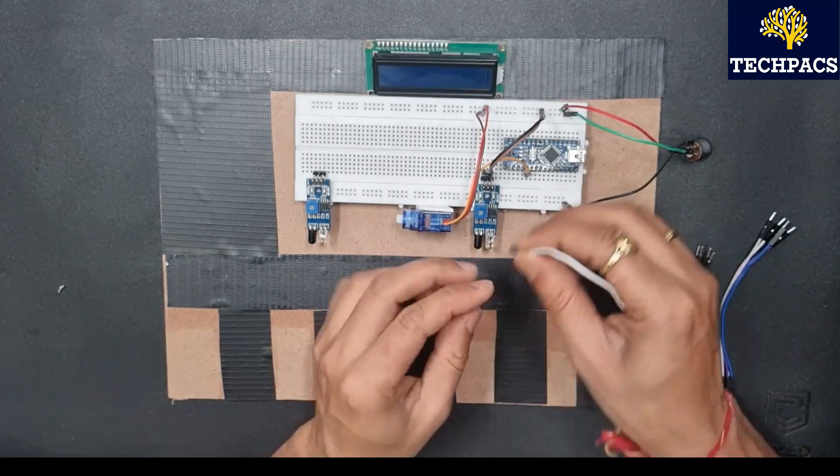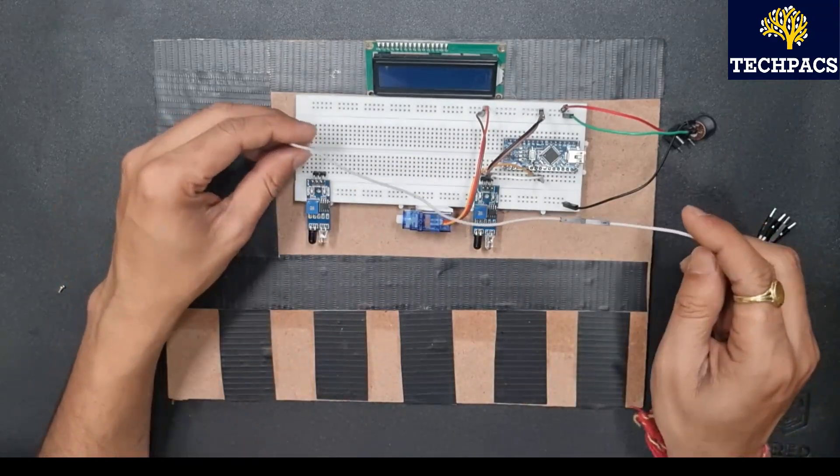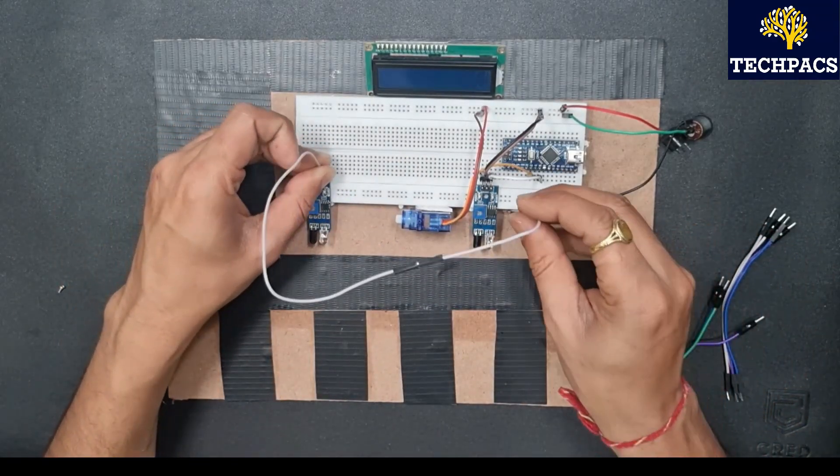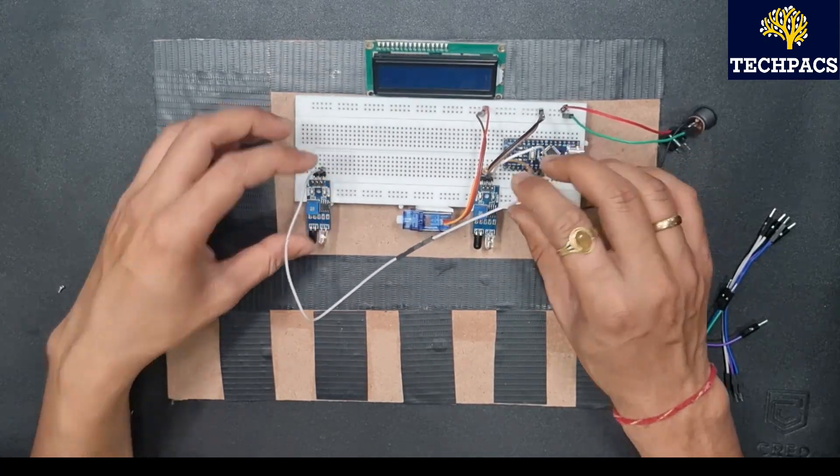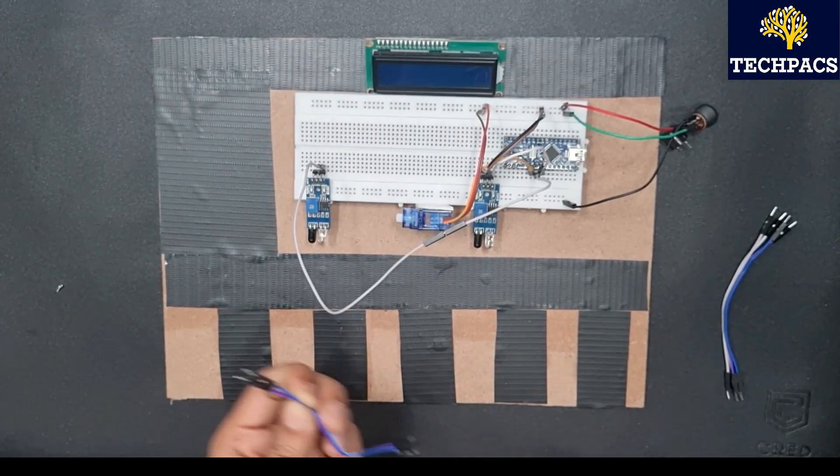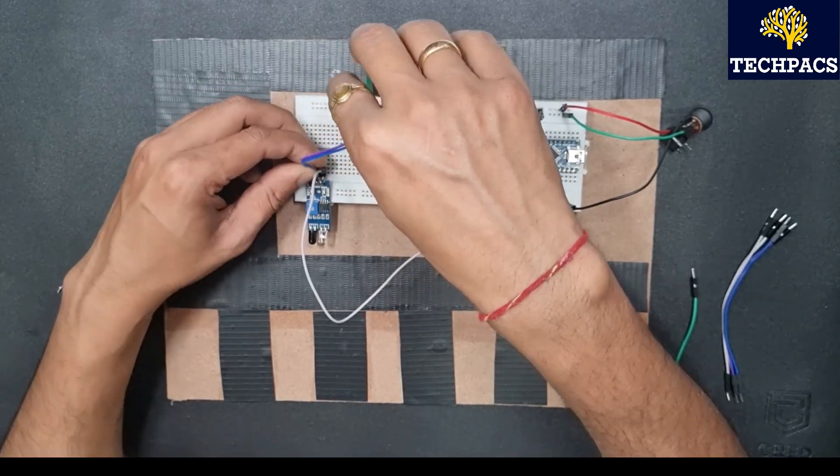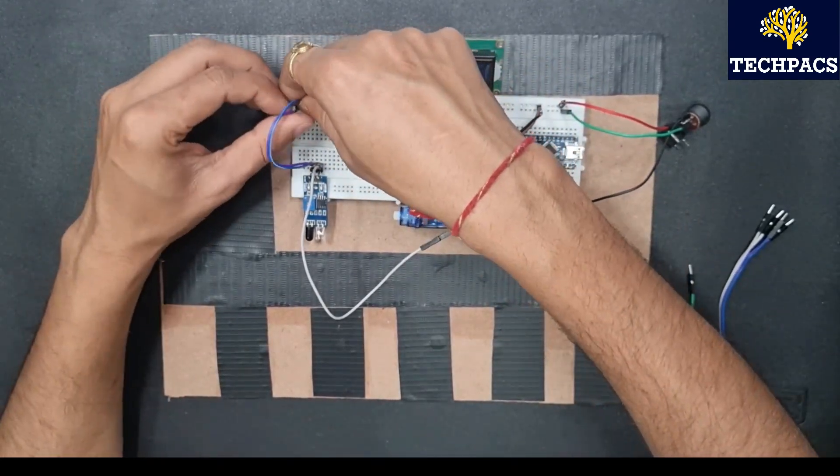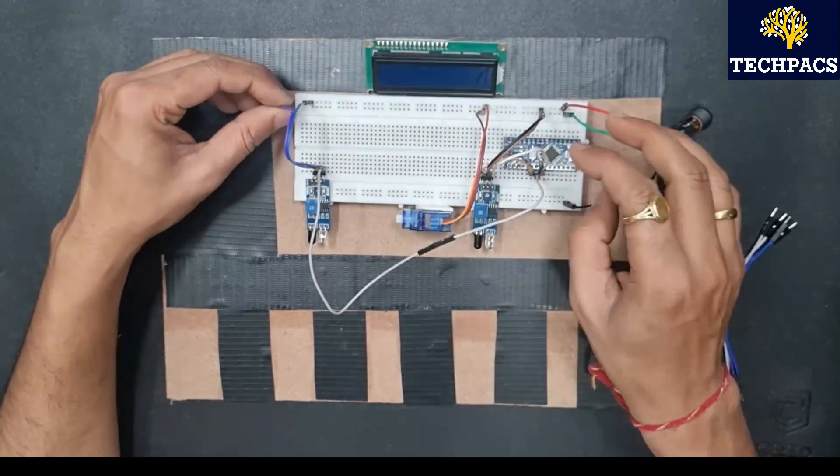Now we will be connecting the IR reflector sensor, grounding it, providing it power supply and connecting it to the Arduino Nano. Same goes with the second IR reflector sensor. Here the power supply and grounding of the second IR reflector sensor has been done.